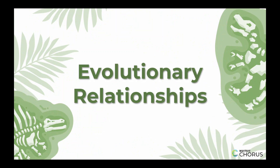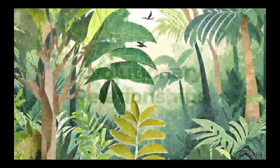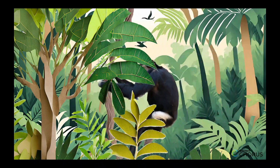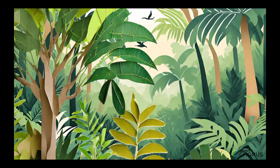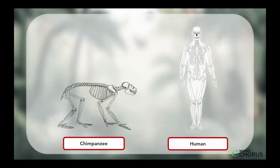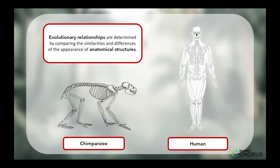Have you ever wondered how scientists hypothesize humans and chimpanzees being related? Scientists can use anatomical similarities and differences to infer evolutionary relationships. Evolutionary relationships are determined by comparing the similarities and differences of the appearance of anatomical structures.